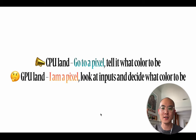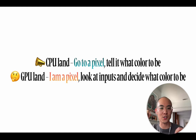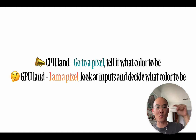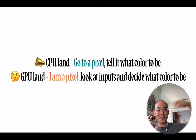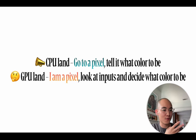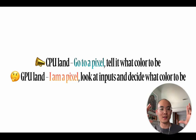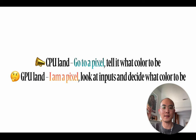The key mental model: in CPU land, it's top-down — you go to a pixel, do some calculation, and tell it what color to be. In GPU land, you are the pixel. The only information you have is what inputs are passed — textures, uniforms, varyings — and based on that information you decide what color you are.